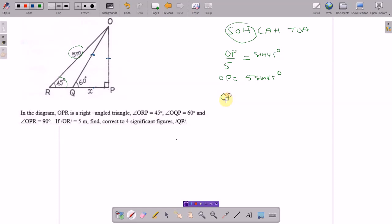OP over X, so tangent is opposite over adjacent, is tan 60 degrees. So OP is X tan 60 degrees.